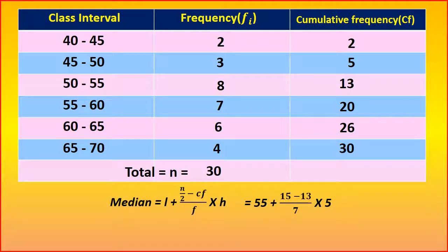Median is equal to L plus n by 2 minus CF by F into H. Replace the values, that is 55 plus 15 minus 13 by 7 into 5.